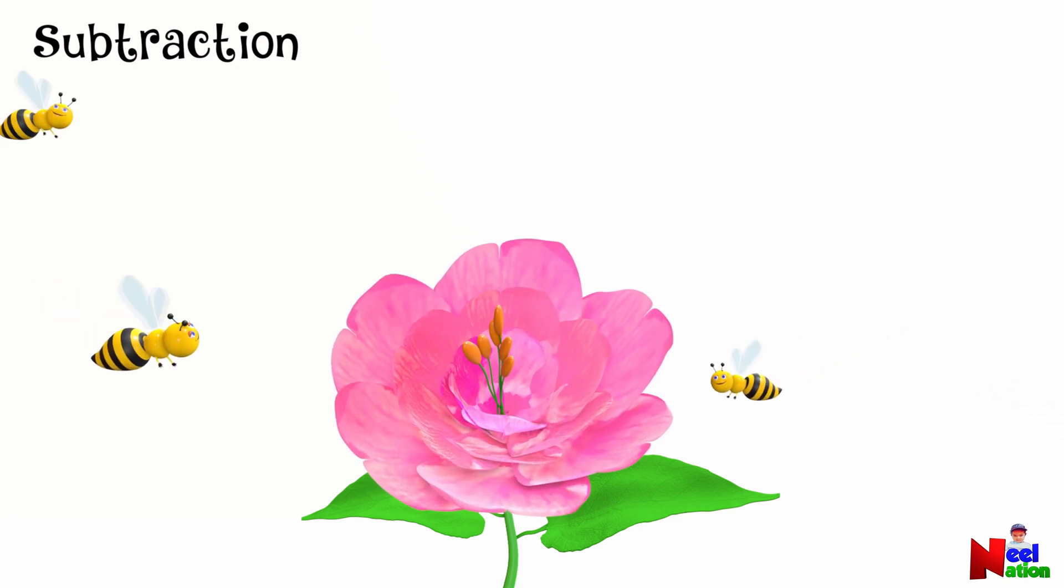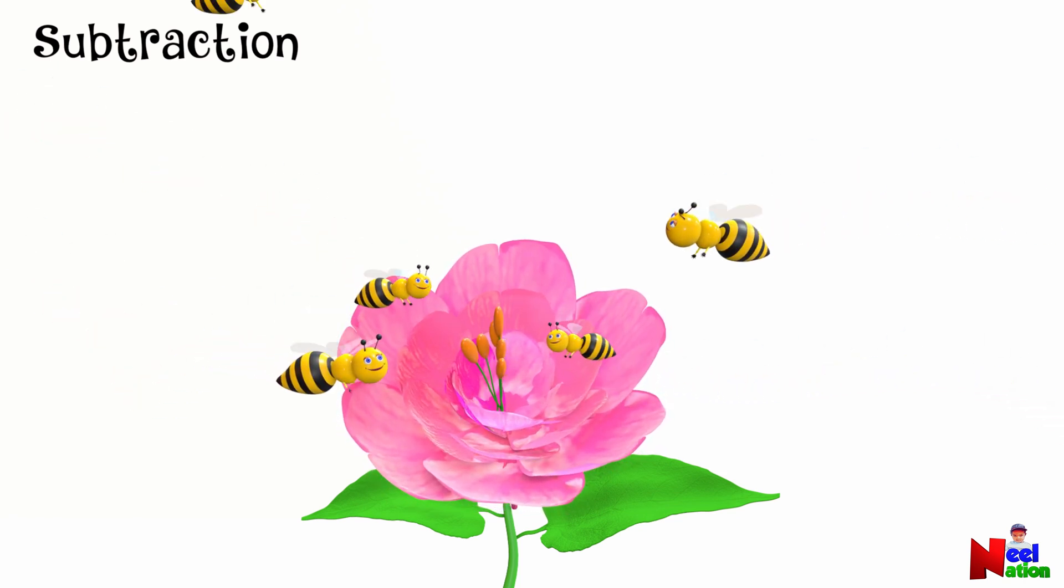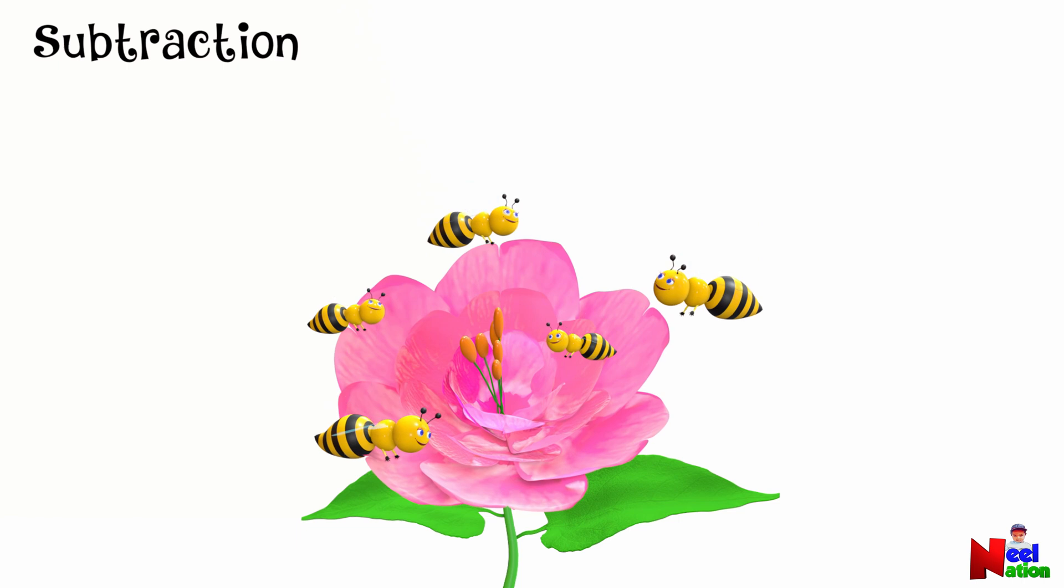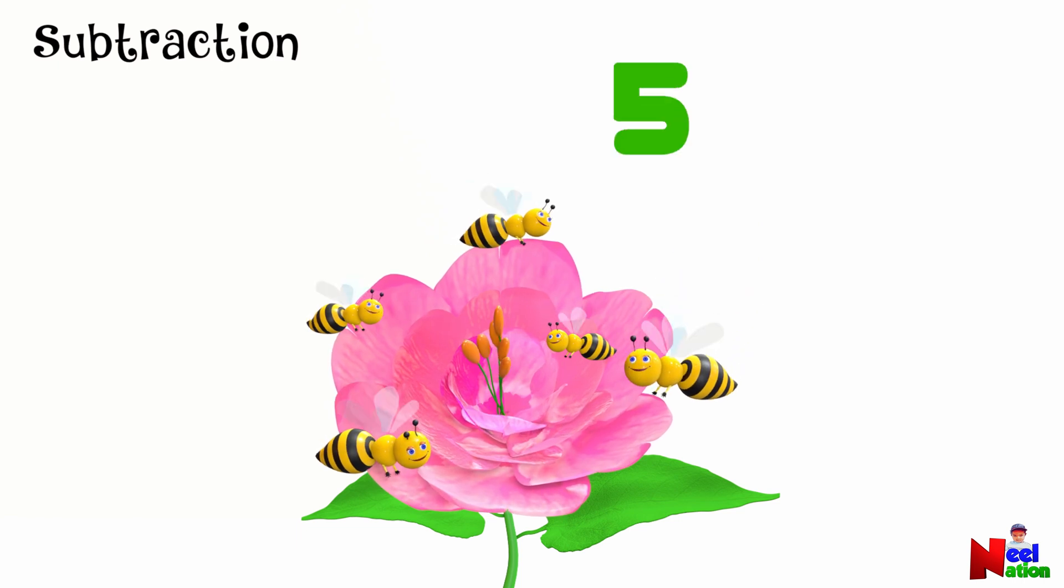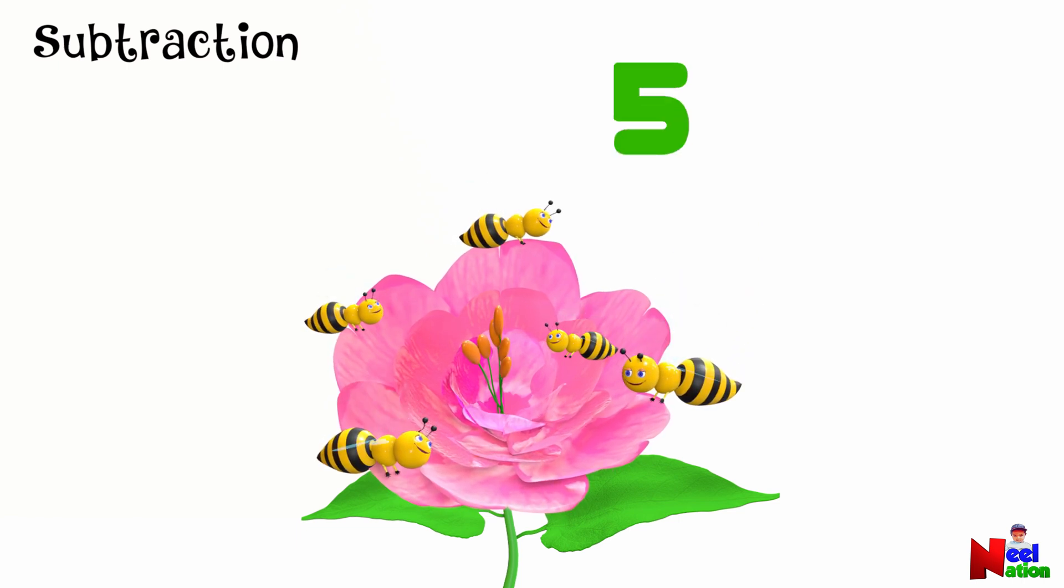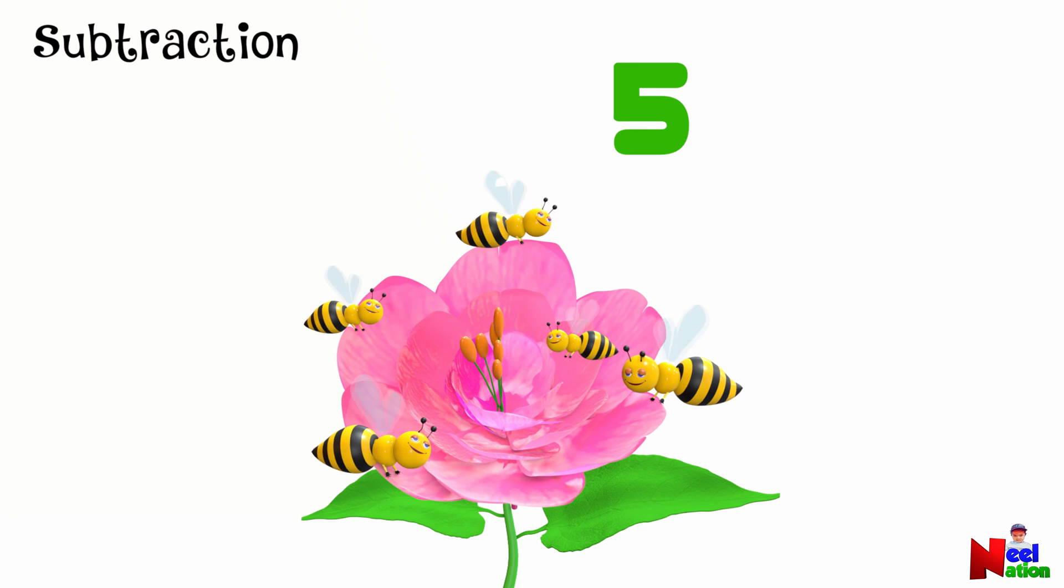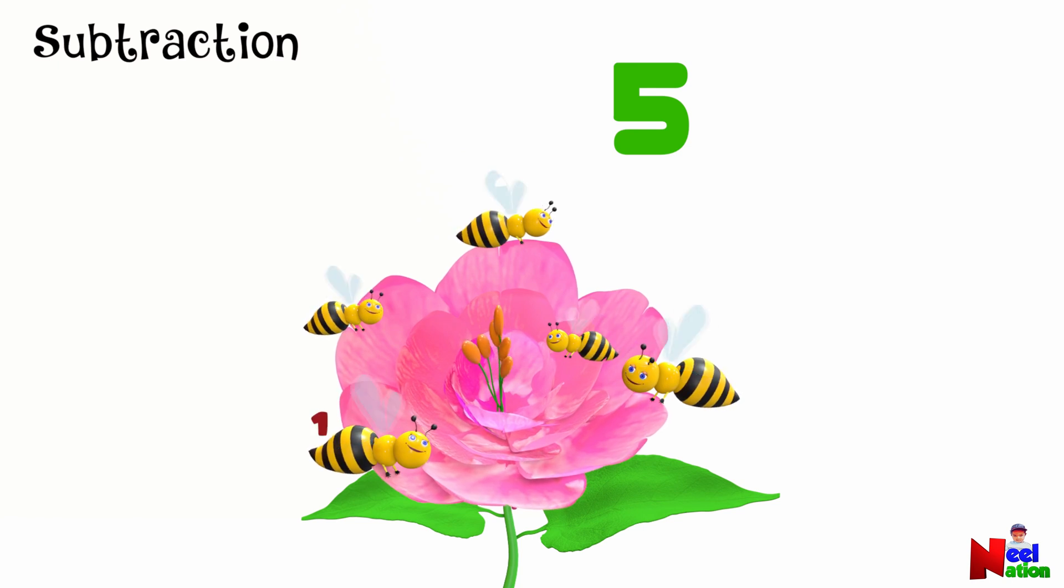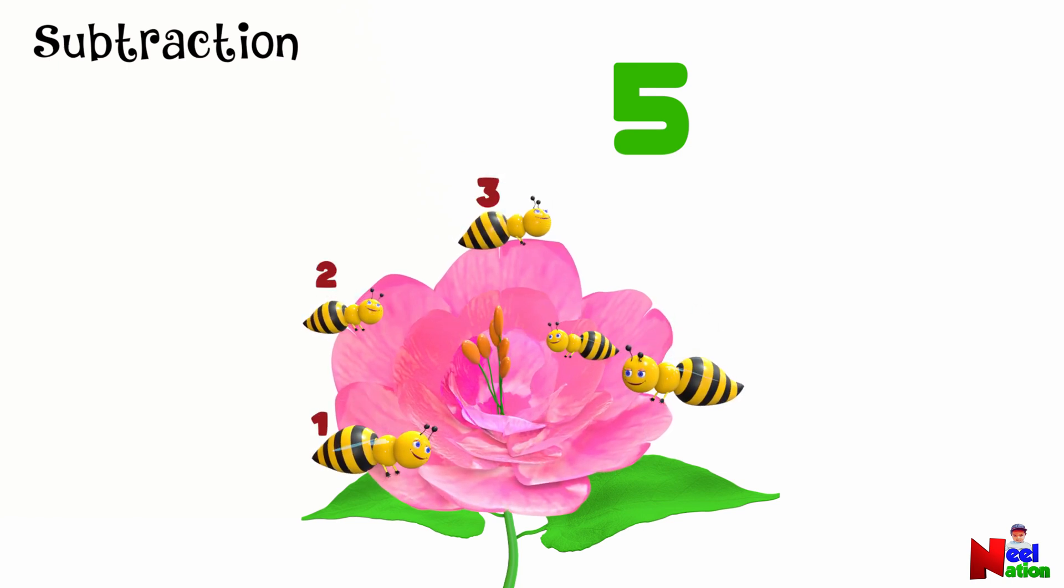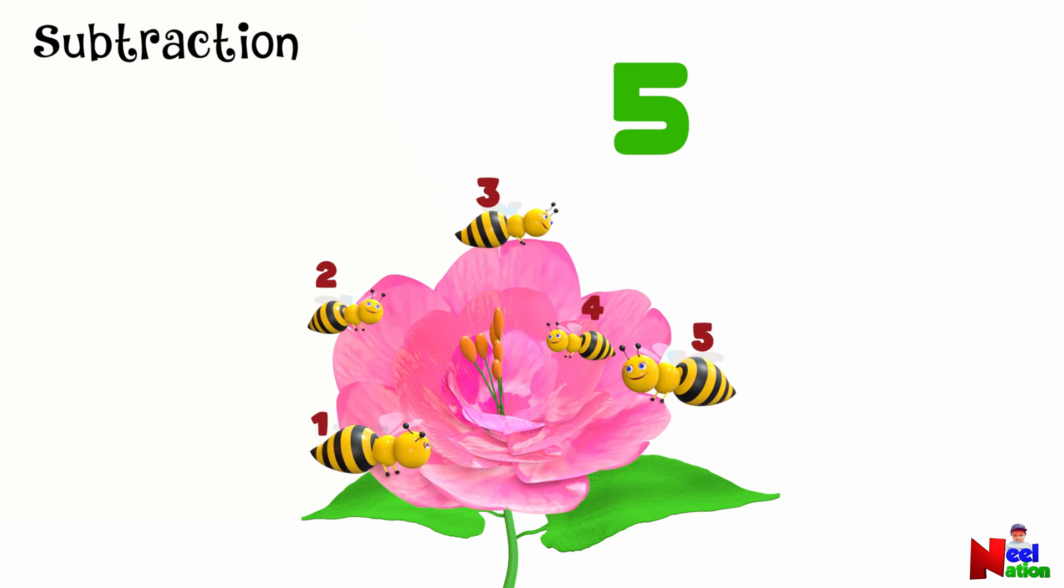Look at this pretty flower. Five busy bees are buzzing around and they all land on the flower. Can you count them? One, two, three, four, five.